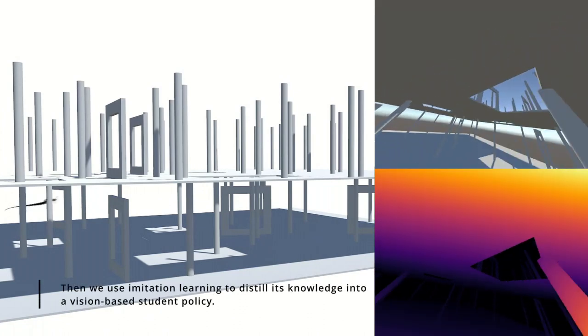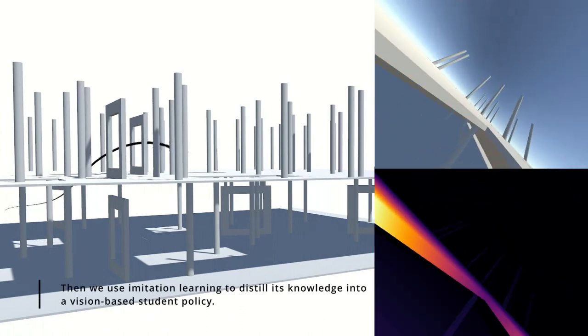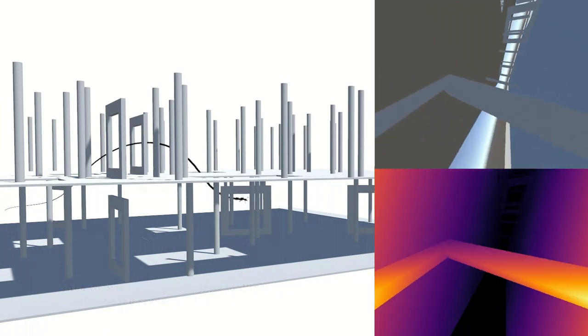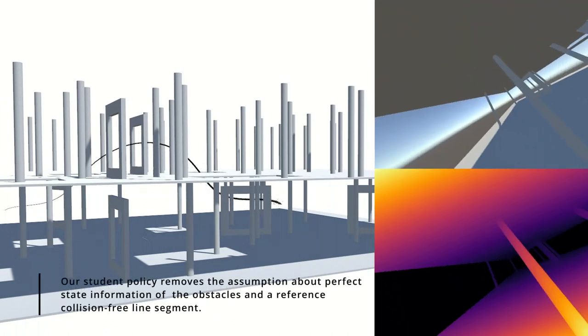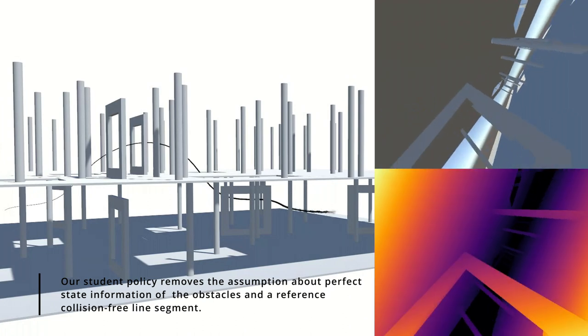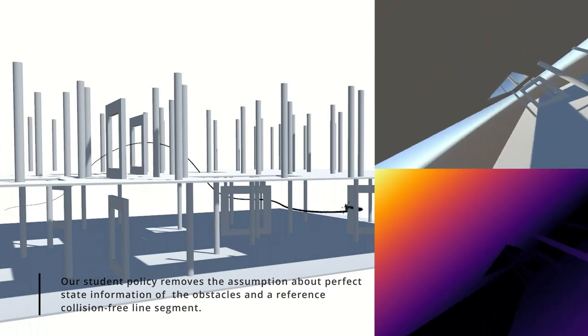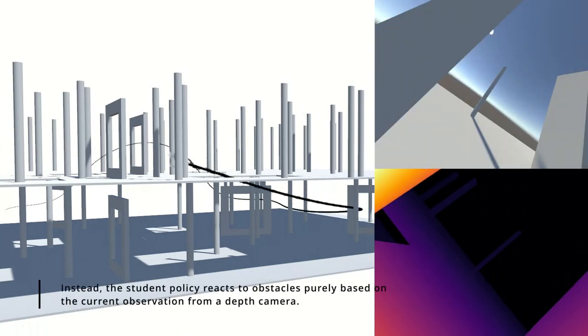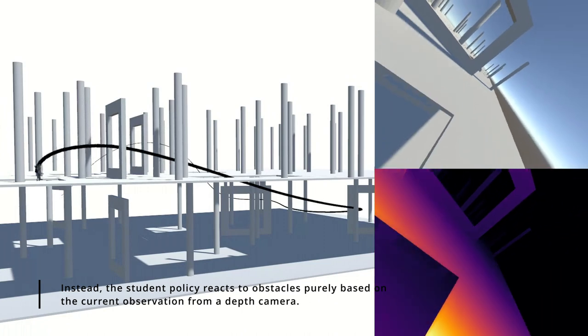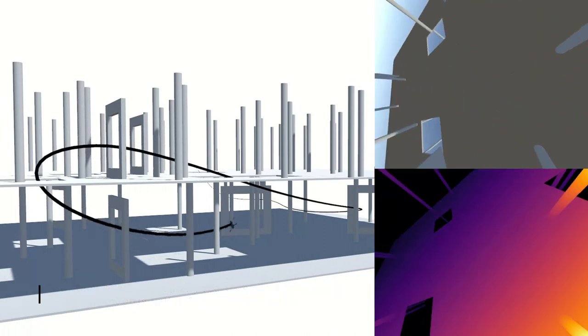Then, we use imitation learning to distill its knowledge into a vision-based student policy. Our student policy removes the assumption about perfect state information of the obstacles and a reference collision-free line segment. Instead, the student policy reacts to obstacles purely based on the current observation from a depth camera.